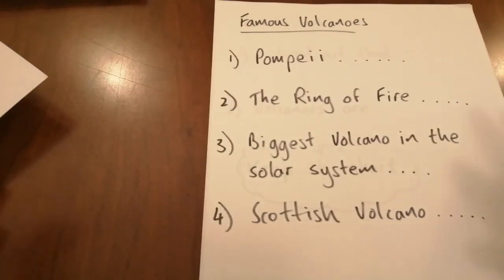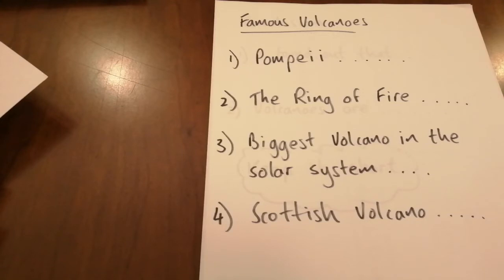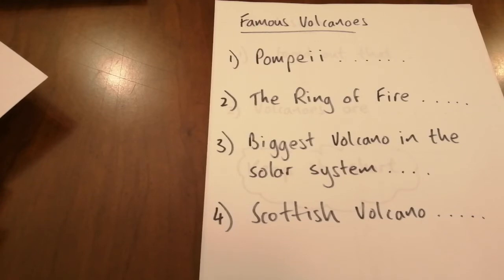Famous volcanoes — I'm giving away some of the secrets here. I've written down Pompeii. If you were to Google that, you would find a lot of information about a very famous volcanic eruption in a city called Pompeii. The Ring of Fire is an area around part of the earth that has got loads and loads of volcanoes. It'd be excellent if somebody could find out about the biggest volcano in the solar system — I'll give you a hint, it's not on earth. There's also a Scottish volcano that's not actually too far from us, and I don't think it's going to erupt anytime soon, but it's interesting information.